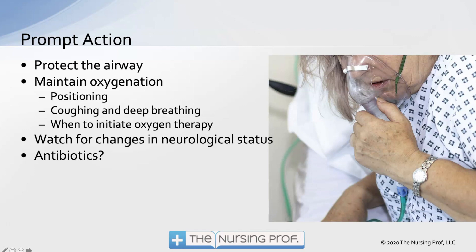Watch for changes in neurologic status. And then, should we be using antibiotics? Remember that aspiration is different from aspiration pneumonia. In aspiration, we have a chemical burn occurring to the lung, versus aspiration pneumonia where we actually have an infection. In many cases, we will give antibiotics prophylactically to try to prevent secondary infection from occurring.